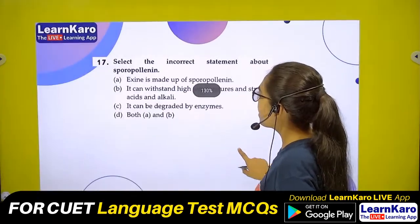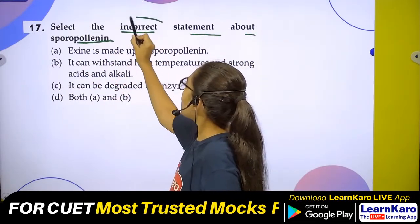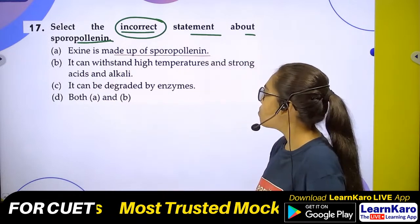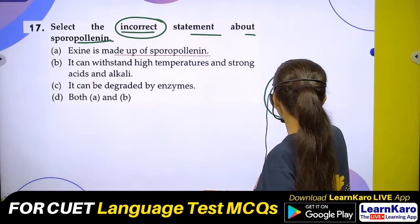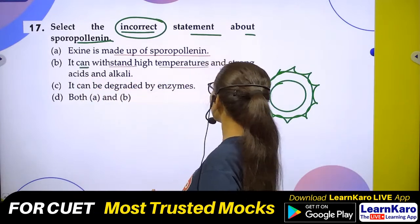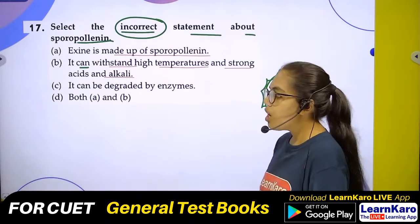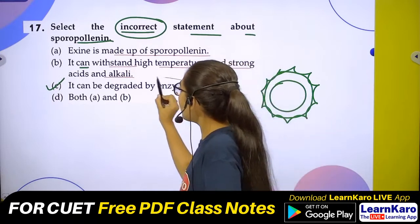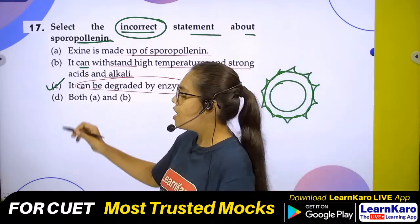Question 17: Select the incorrect statement about sporopollenin. Statements include: exine is made of sporopollenin, it can withstand high temperature and strong acids and alkalis. The incorrect statement is that sporopollenin can be degraded by enzymes — because sporopollenin cannot be degraded by any means. Correct answer is Option C.